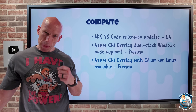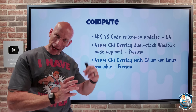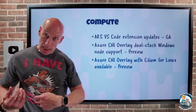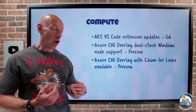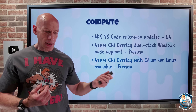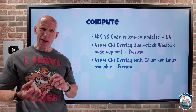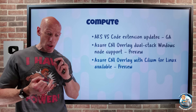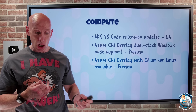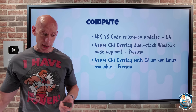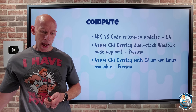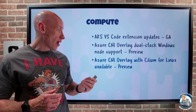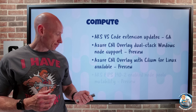Following on from that, if I'm using Azure CNI Overlay with CNI Cilium for Linux, that also now has dual stack support. That gives me the control plane of the Azure CNI Overlay but the data plane of Cilium, which gives you very high-performance networking, great observability, great security — and now IPv4 and IPv6 as well.